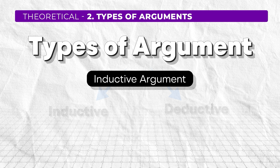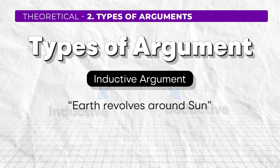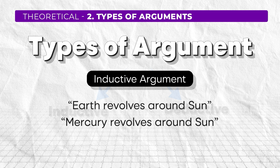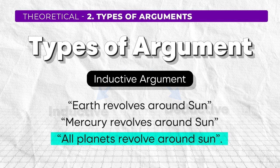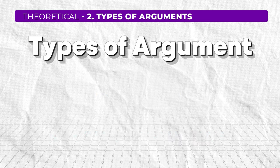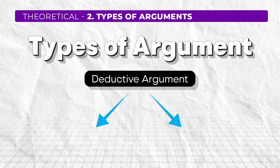Inductive argument moves from specific to general. For example, Earth revolves around the Sun, Mercury revolves around the Sun, and since Earth and Mercury are planets, I can conclude that all planets revolve around the Sun. I specifically mentioned two planets and then moved to the general notion that all planets revolve around the Sun. Now, if you look at these two categories, they are subdivided. Deductive argument has two kinds: valid and invalid.